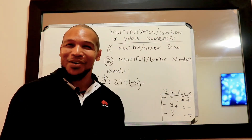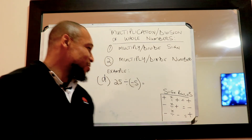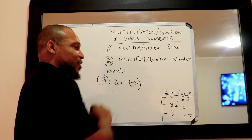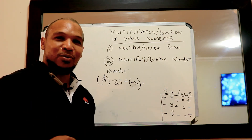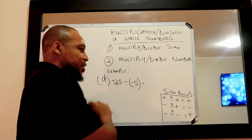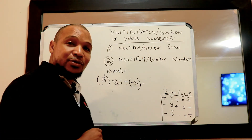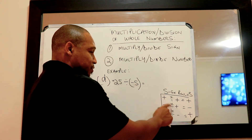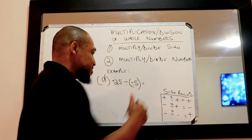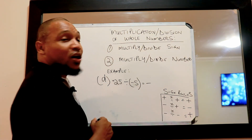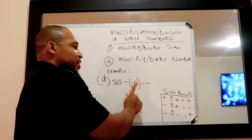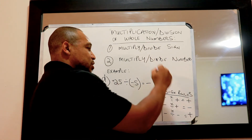Let's look at an example where we're going to divide. We have twenty-five divided by negative five. The same rules apply — we look at our signs: positive and a negative. We look at our sign rules, and a positive and a negative gives us a negative outcome. After that we divide the numbers: twenty-five divided by five is equal to five. So our answer is negative five.